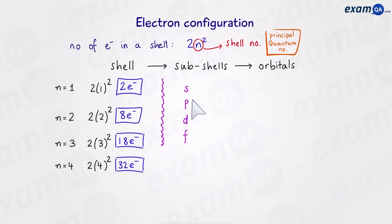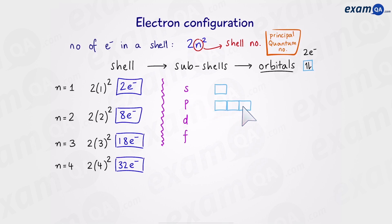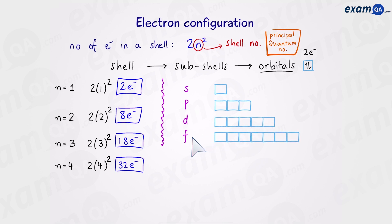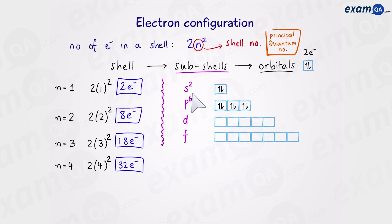Remember that shells are broken down into subshells, which are then broken down into orbitals. The subshells are not all the same size. The s subshell is the smallest — it can hold only 1 orbital. The p subshell can hold 3 orbitals. The d subshell can hold 5 orbitals. And the f subshell holds 7 orbitals. Since there are 2 electrons in 1 orbital, the s subshell holds up to 2 electrons, p holds 6, d holds 10, and f holds up to 14 electrons.